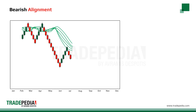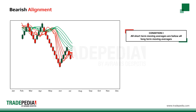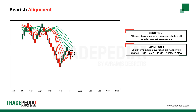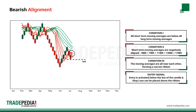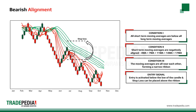A bearish alignment signal is given when the following conditions are met. Condition one: all short-term moving averages are below all long-term moving averages. Condition two: all short-term moving averages are negatively aligned — that is, the 4 period goes below the 7th, the 7th below the 11th, the 11th below the 14th, and so on. Condition three: the moving averages are all near each other, forming a narrow ribbon. The entry is activated below the low of the candle that generated the signal, and a stop-loss can be placed above the moving average ribbon.